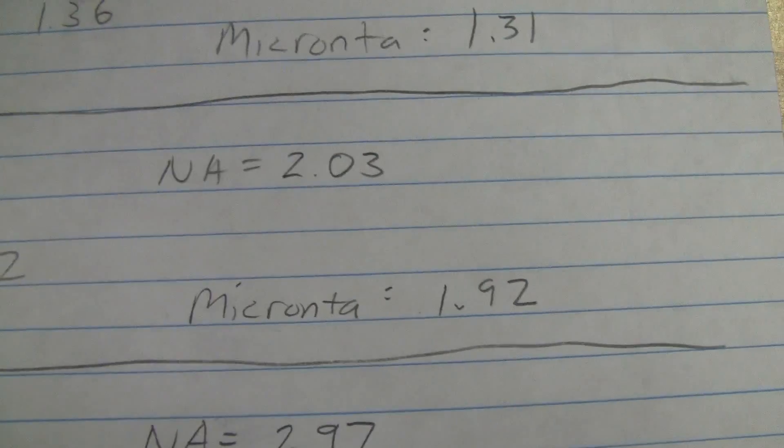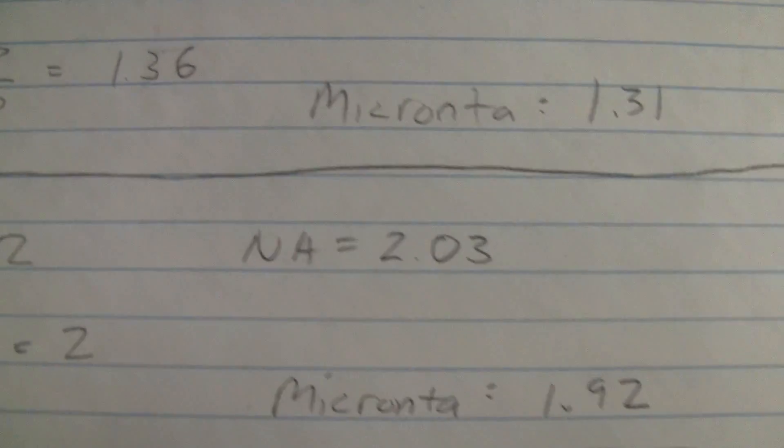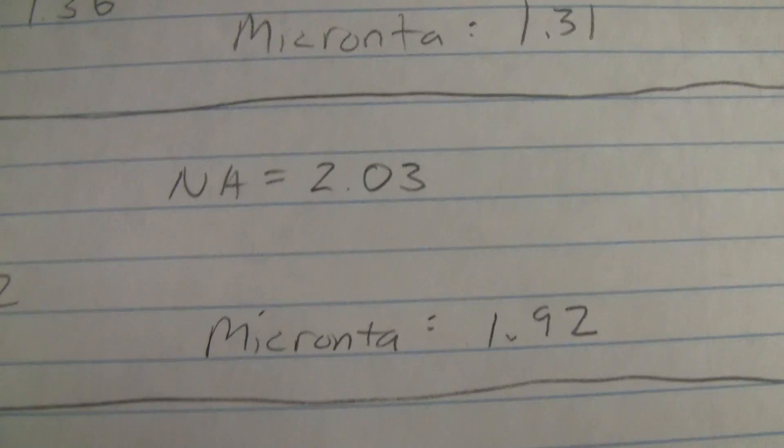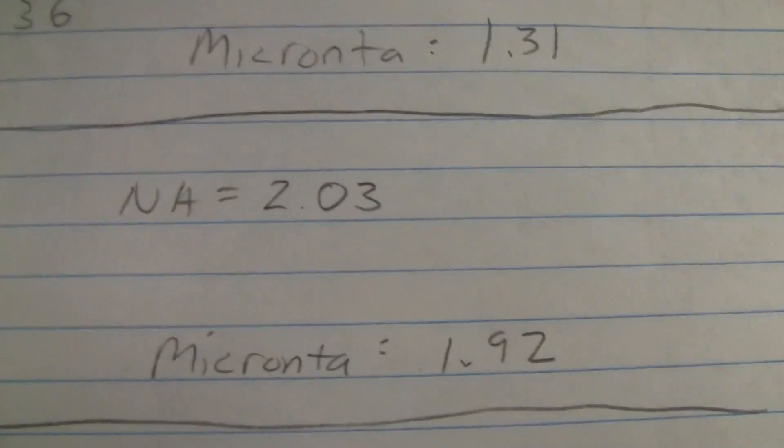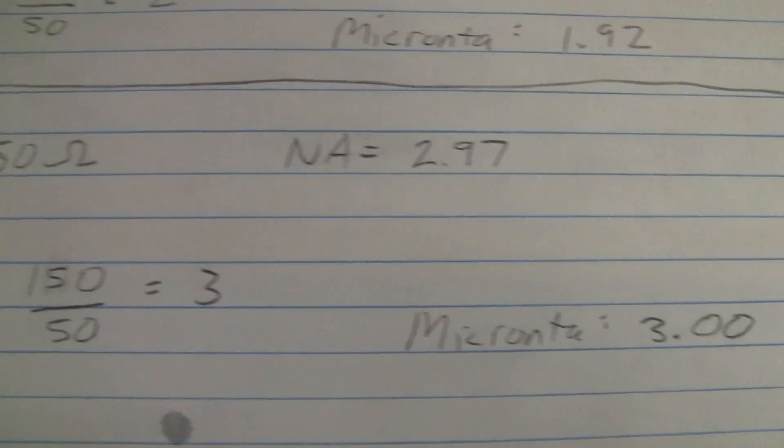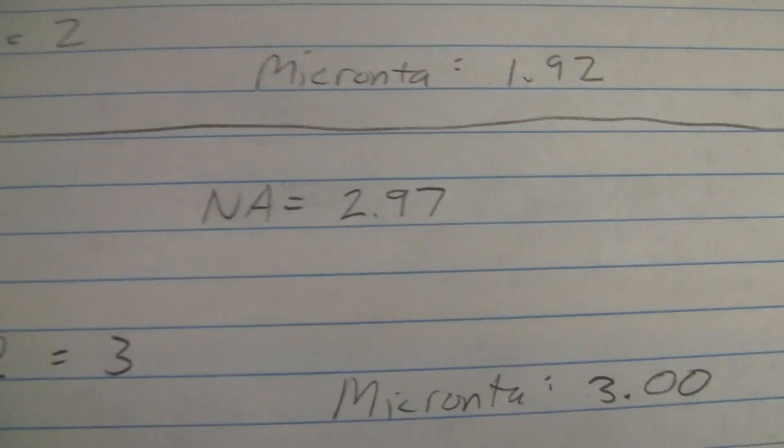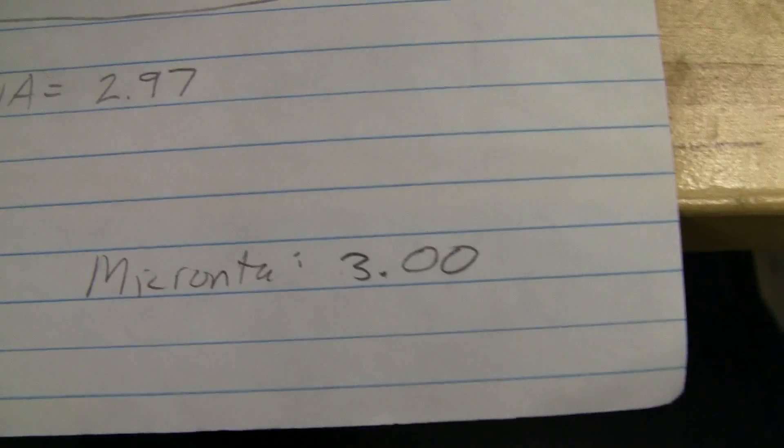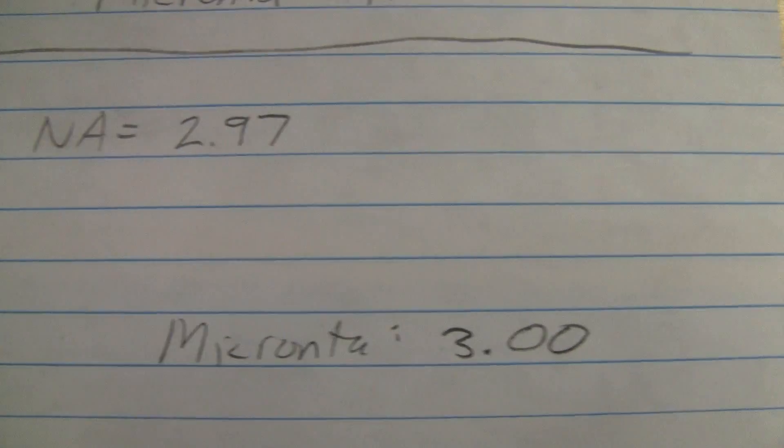Next, 100 ohms, we'd expect about 2, and that's what we get on the network analyzer. Micronta, just a little bit off, 1.92, or whatever your interpretation of that needle movement was. And 150 ohms, we've got expected 3, network analyzer measured just about 3, and Micronta was pretty much on 3, maybe just a touch above.